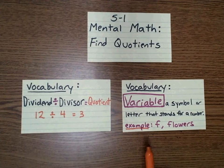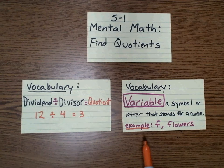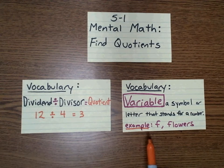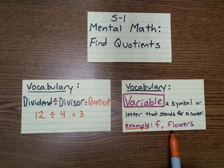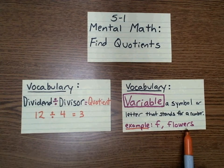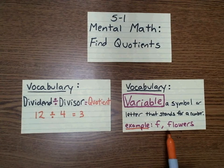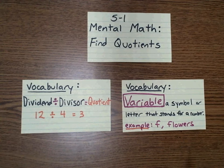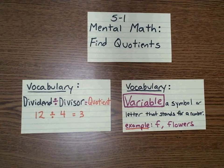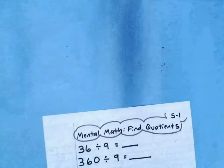Another vocabulary word we talk about in this topic is a variable. A variable is a symbol or a letter that stands for a number. For example, if we're looking for how many flowers, we might choose F to be our variable to stand for the word flower. I'm going to be doing an example of that later in the video.